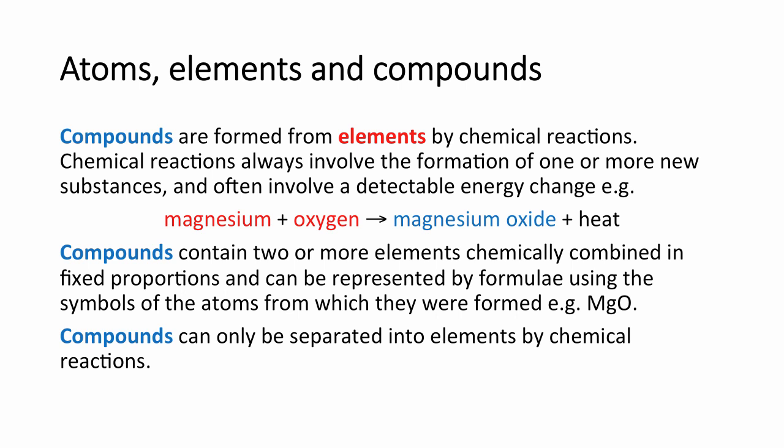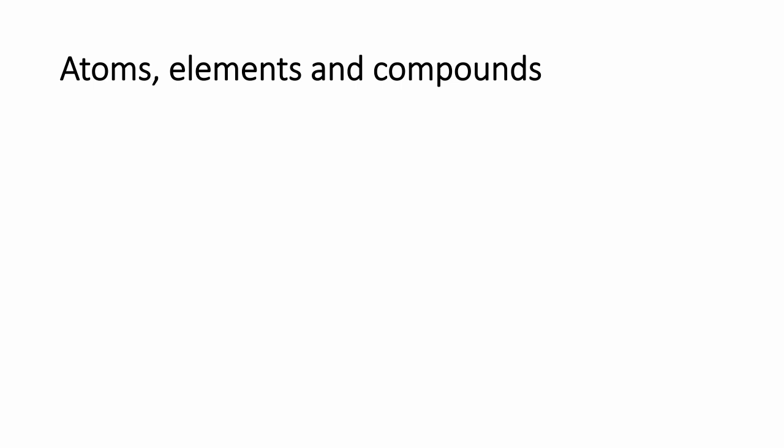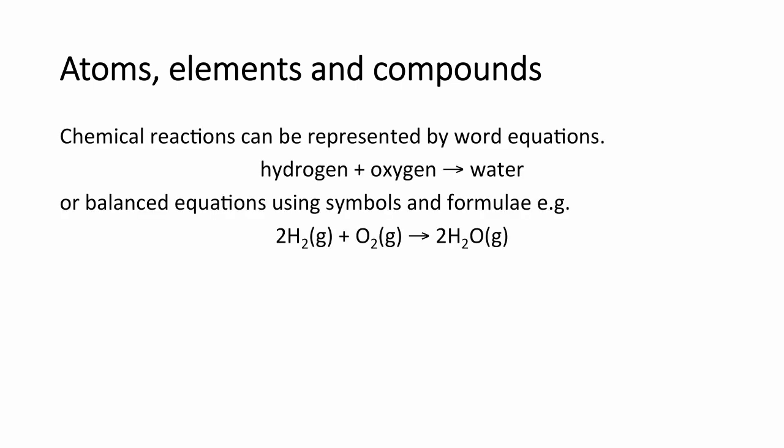Compounds can only be separated by chemical reactions because they have been formed by a chemical reaction. We can represent chemical reactions using word equations. For example, hydrogen plus oxygen makes water, or for higher tier students, balanced chemical equations using symbols and formulae.